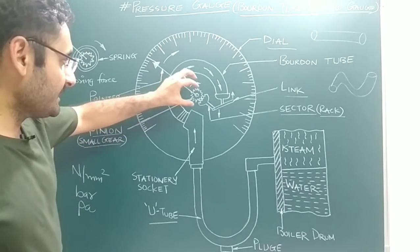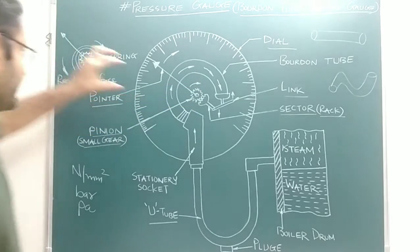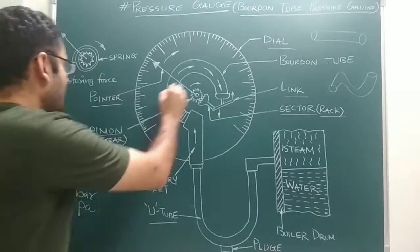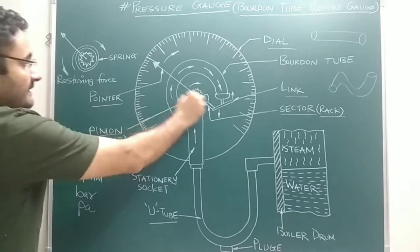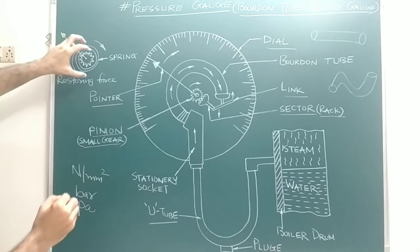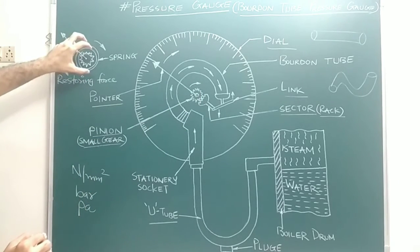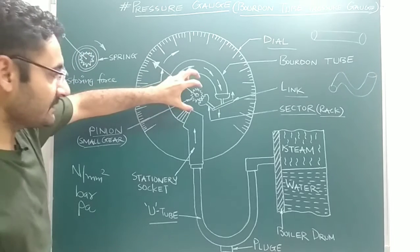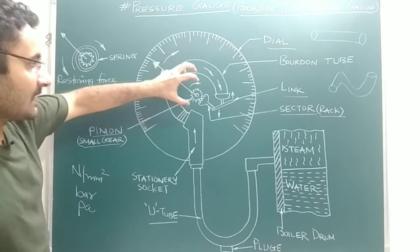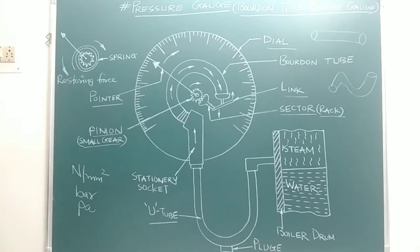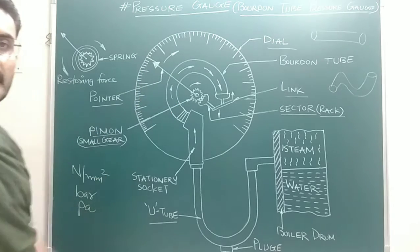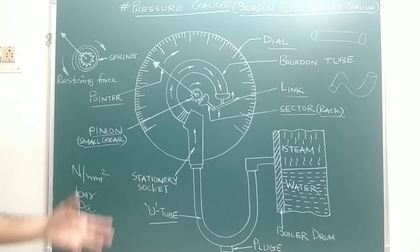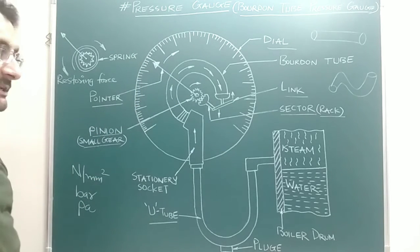The pinion is mounted on a spring. The spring applies a restoring force on the pinion so that the pinion and pointer can return to their original position. This is all about the construction of the pressure gauge.